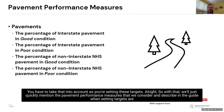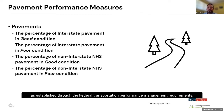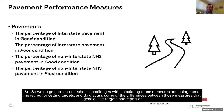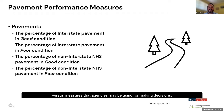The pavement performance measures considered in the guide are those established through federal transportation performance management requirements: the percentage of interstate pavements in good or fair conditions as defined in 23 CFR 490 Part C. The guide discusses technical challenges with calculating those measures and differences between the measures agencies set targets for versus measures agencies use for making decisions.